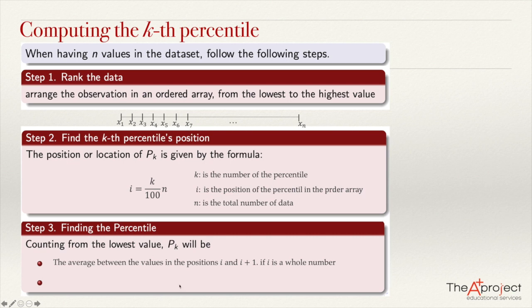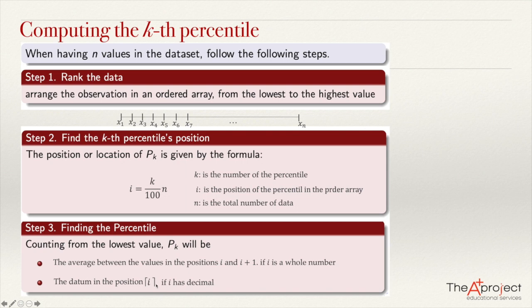The other situation is that you get a number with a decimal — not a whole number. In this case, you round up the index. The ceiling symbol — a bracket open at the bottom — means round up the number. Then the data in that rounded-up position is the percentile you are looking for.